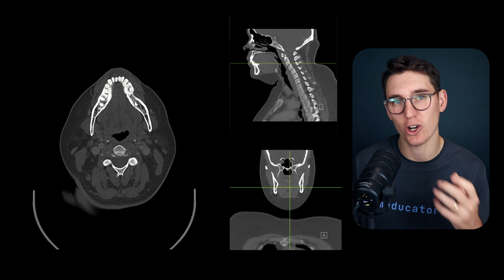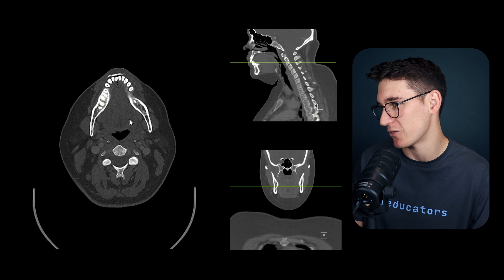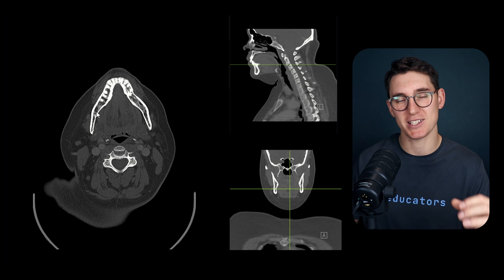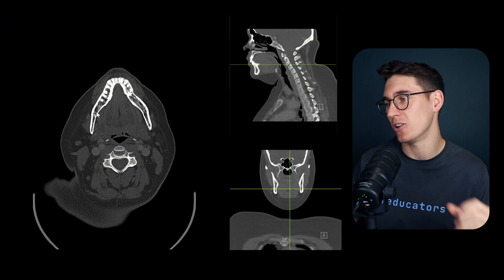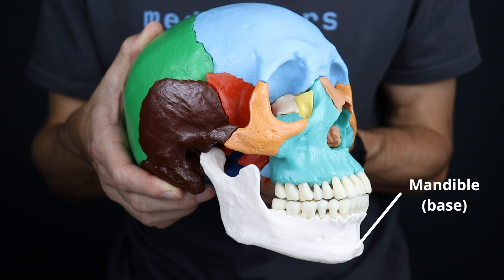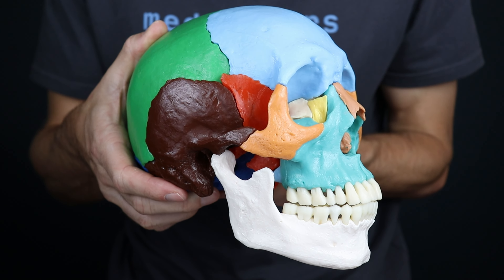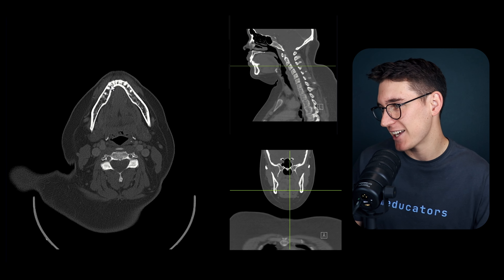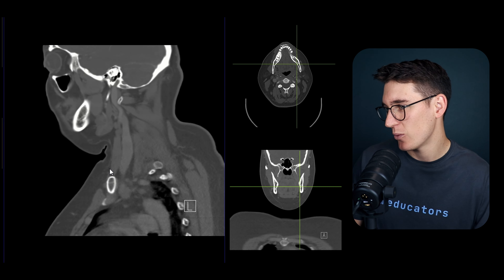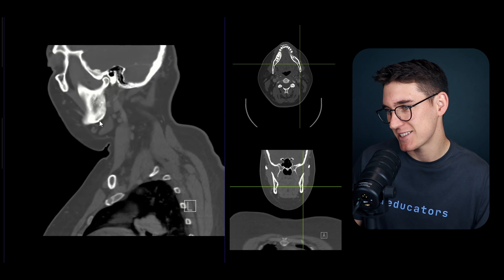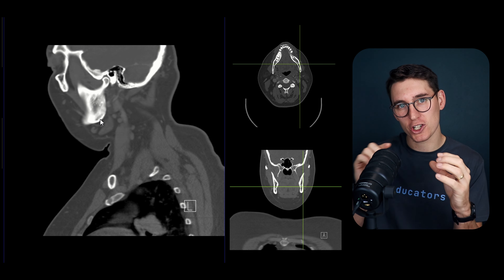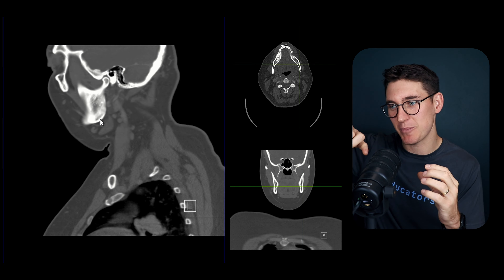The mandible can be separated into multiple parts. The body of the mandible is the anterior part, which can be divided into a bony part and an alveolar part - the alveolar part housing the teeth, and the bony part below (also known as the base of the body). Heading posteriorly, we reach an angle best seen on our sagittal slice - the angle of the mandible - which marks where the body becomes the mandibular ramus.